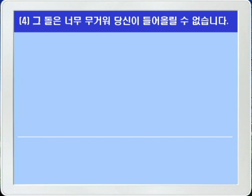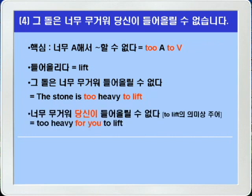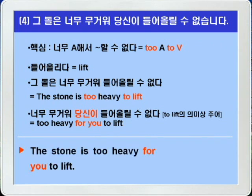4번. 그 돌은 너무 무거워 당신이 들어올릴 수 없습니다. 너무 A해서 투부정사할 수 없다는 'too A to 부정사' 구문을 씁니다. 들어올리다는 lift입니다. 주어가 the stone이고 들어올리는 것은 당신이니까, to lift의 의미상의 주어 for you를 써줍니다. 정답: 'The stone is too heavy for you to lift.'